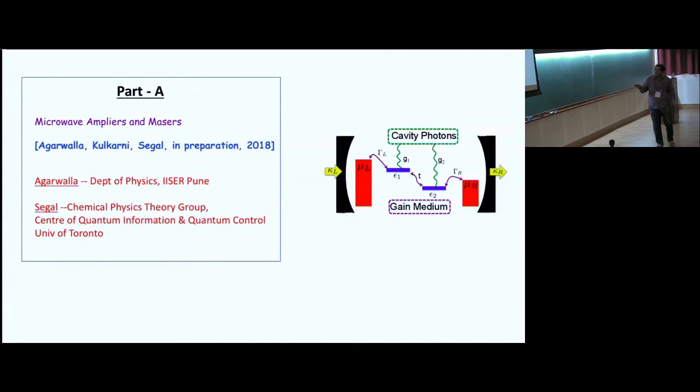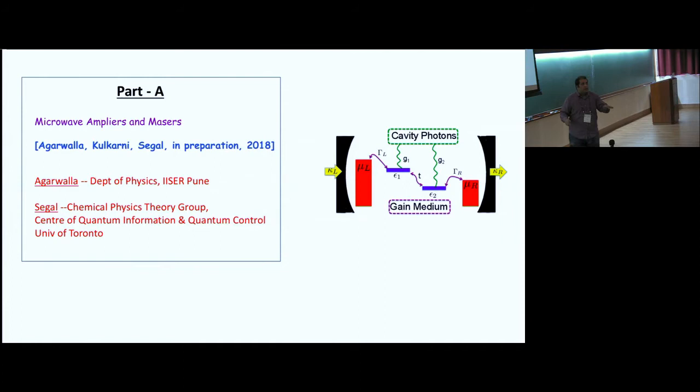For part one, all you need to remember is this diagram: left lead, right lead at different chemical potentials, and two quantum dots. You can have electronic transport — current through the quantum dots — but they are also coupled to photons. The natural question is: if I run an electronic current, what is the impact on the photonic part of the system?